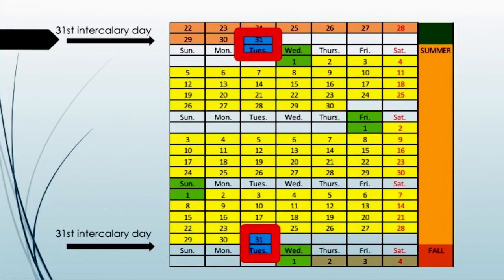We go through the season of summer with month 4, month 5, and month 6. At the end of month 6, we have another 31st intercalary day. The reason, again, is to keep the next season of fall from beginning on the wrong day. It has to begin on the fourth day of the week, Wednesday.